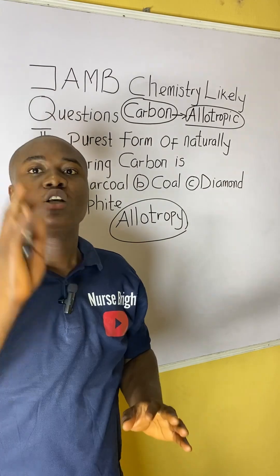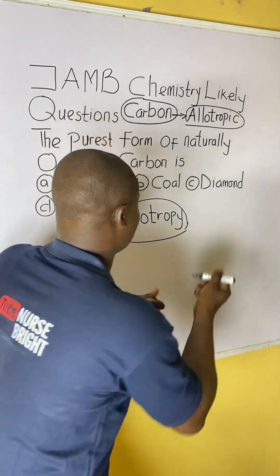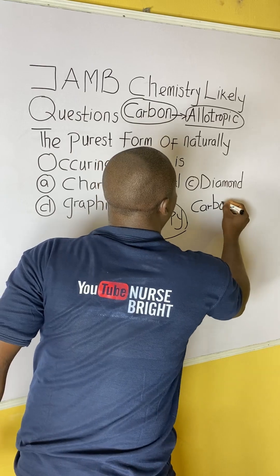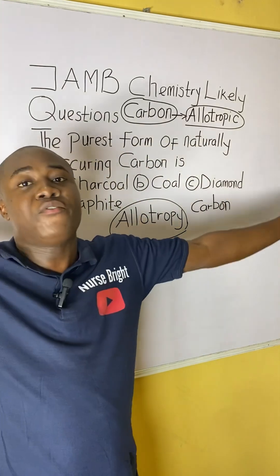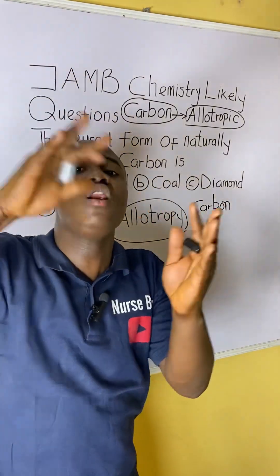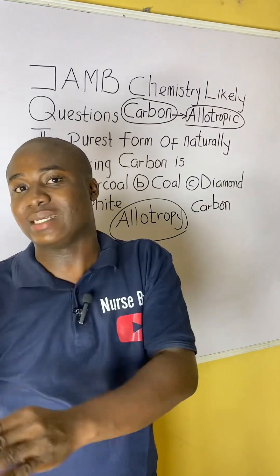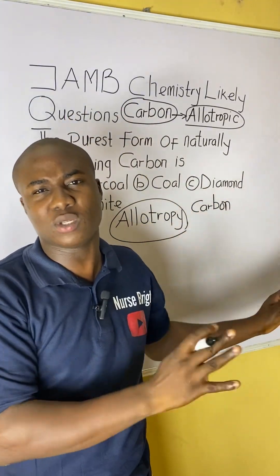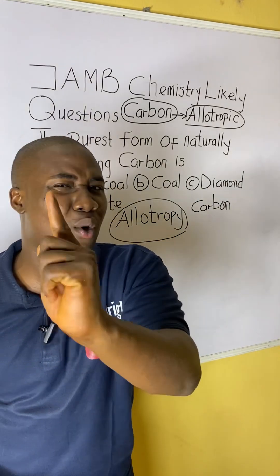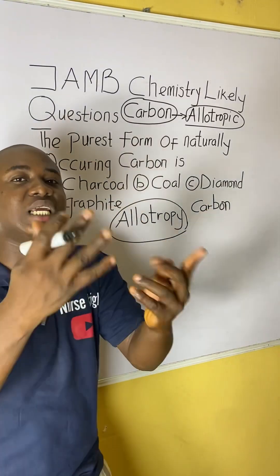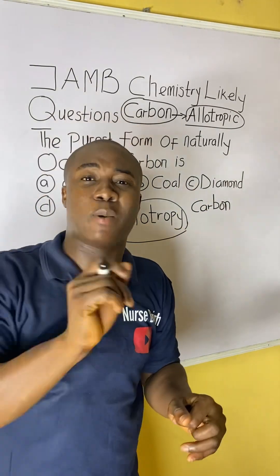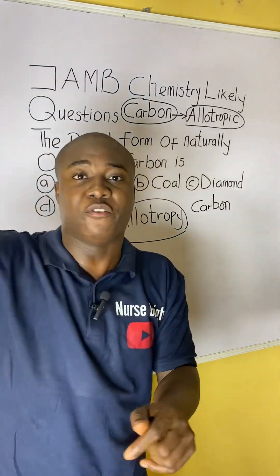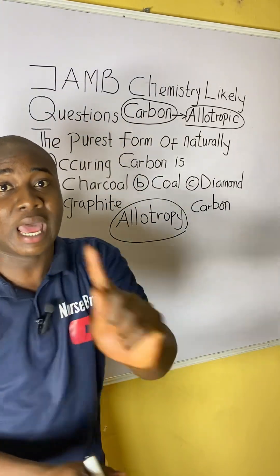Carbon as an element exists in different forms, but all of these forms in which carbon exists are all in the same physical state. So, the question you ask yourself is: what are the different allotropic forms in which carbon exists?